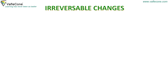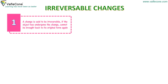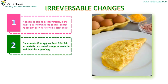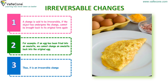Irreversible changes. A change is said to be irreversible if the object that has undergone the change cannot be brought back to its original form again. For example, if an egg has been fried into an omelette, we cannot change an omelette back into the original egg. Thus, it is an irreversible change.